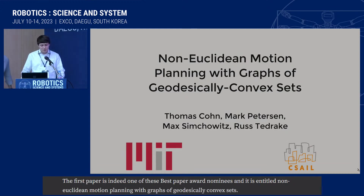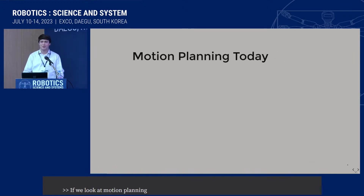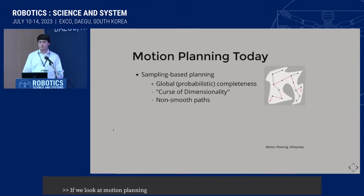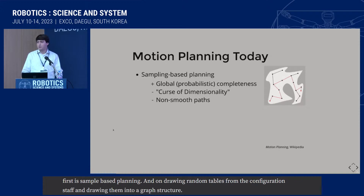If we look at motion planning today, most algorithms fall into two main categories. The first is sampling-based planning. It relies on drawing random samples from the configuration space and connecting them into a graph structure. Graph search is well understood, and we know we can get global probabilistic completeness. But the number of samples required may grow exponentially with the dimension in the worst case.